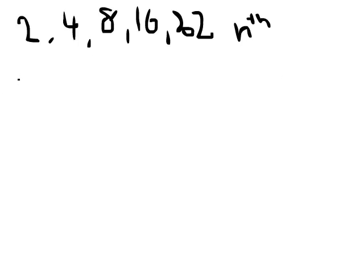To find the nth term for a geometric sequence, we have to find the common ratio. The way we get from 2 to 4 is multiplying by 2, and that's the same way we get from 4 to 8, 8 to 16, and 16 to 32. So, the common ratio is 2, times 2.